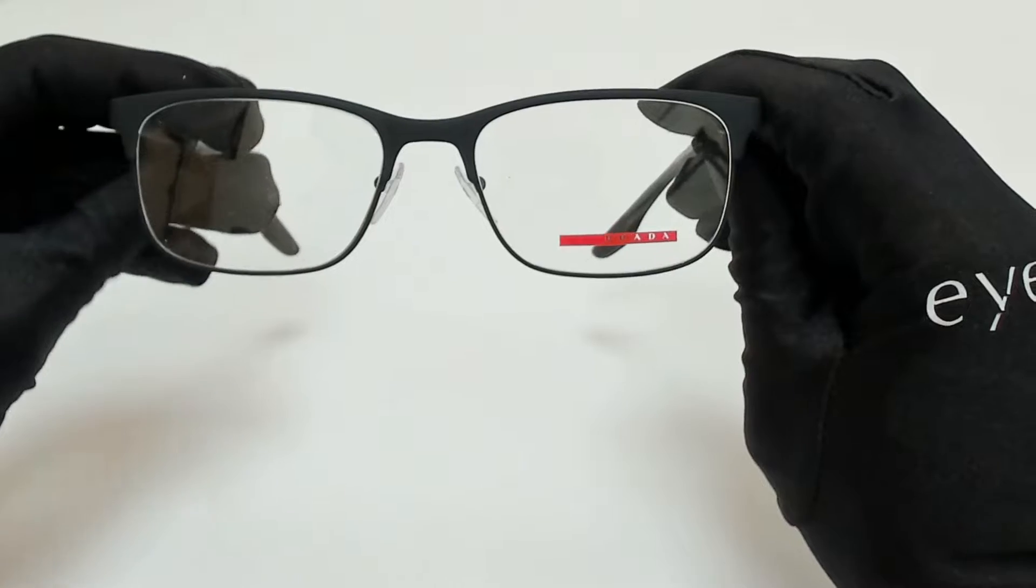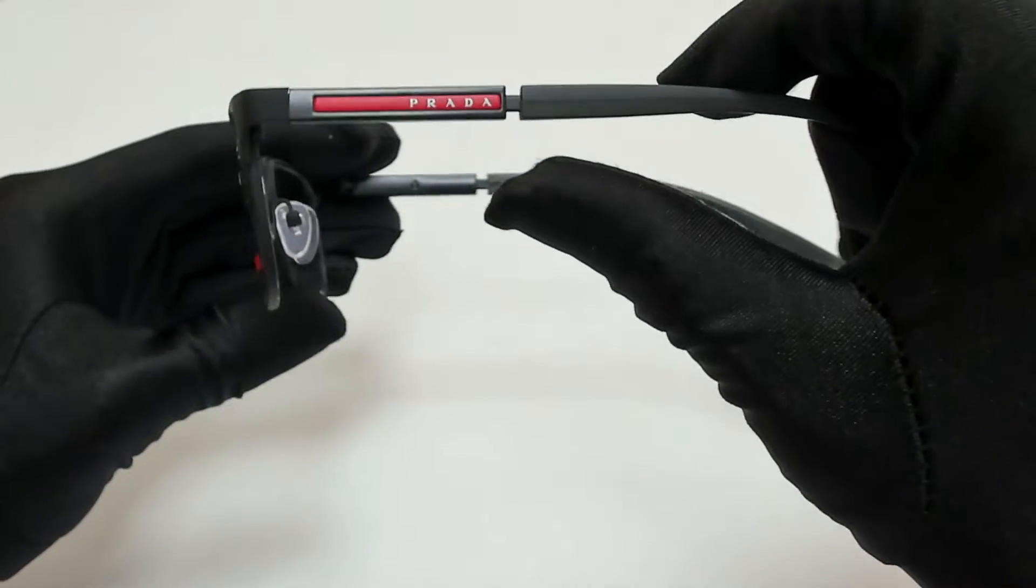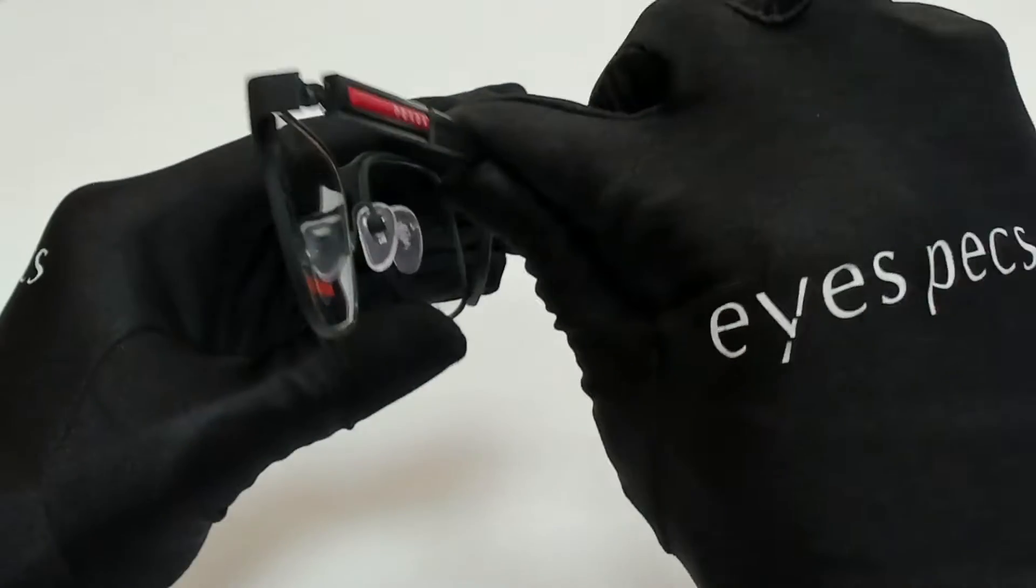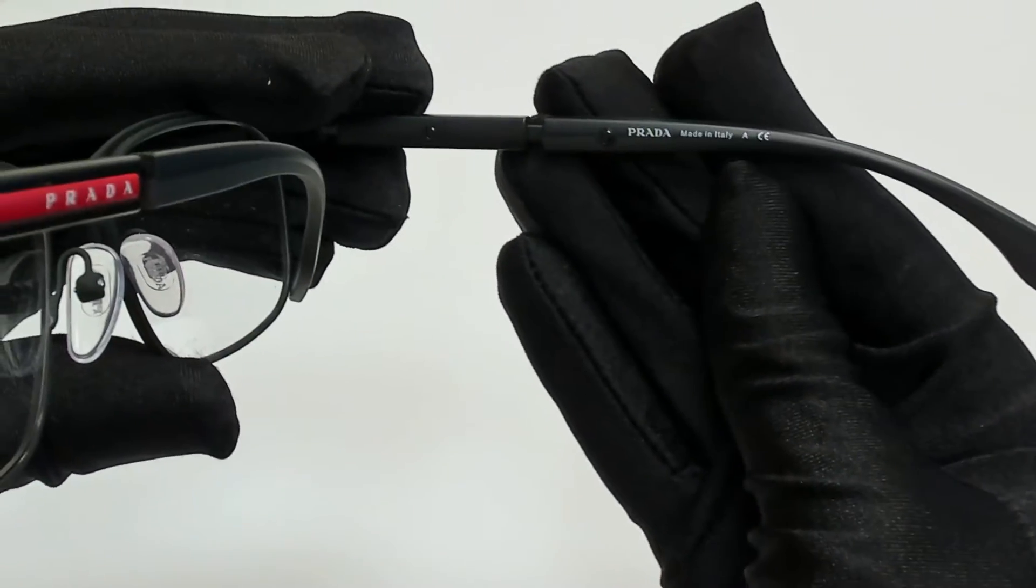The color of the frame is black rubber and red, and it has a square shape. On its temples, you'll find the Prada Lina Rosa line detail, and Prada can be found on its nose pads, and it's made in Italy.